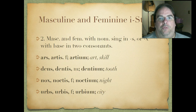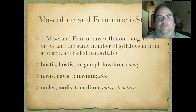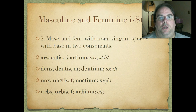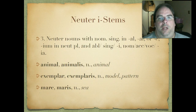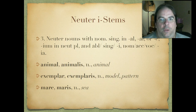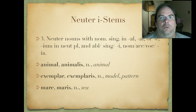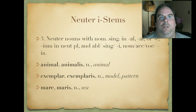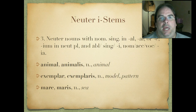To summarize: we have two masculine/feminine categories — the parasyllabics and the base-in-two-consonants — and then last but not least, neuters with the nominative singular ending in AL, AR, or E. Genitive plural would be I-U-M. Examples: animal, animalis — easy to remember because that's exactly where we get our word animal from. Exemplar, exemplaris, and mare, maris. These decline with ablative singular ending in I, not E, and in the plural we have I-A, I-U-M, ibus, I-A, ibus — the I-S and I-U-M are fairly easy to form.